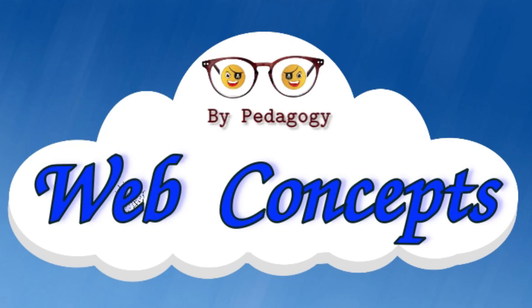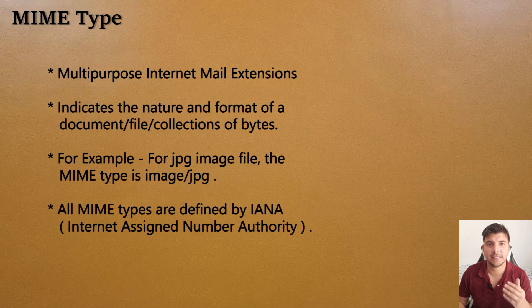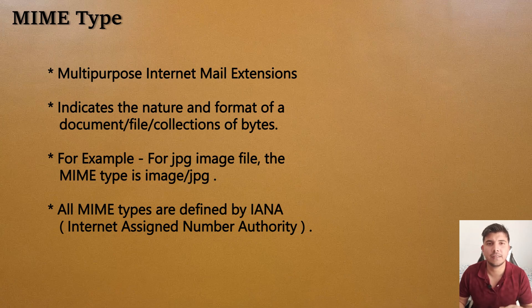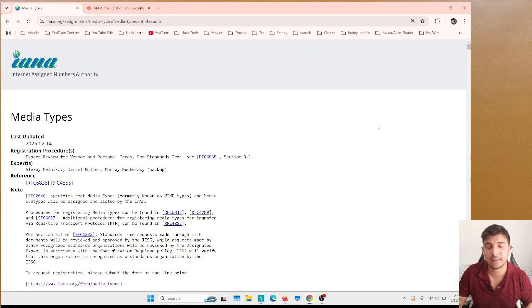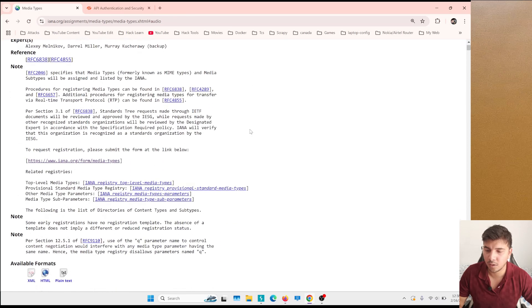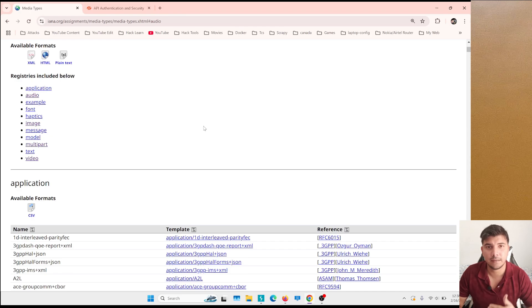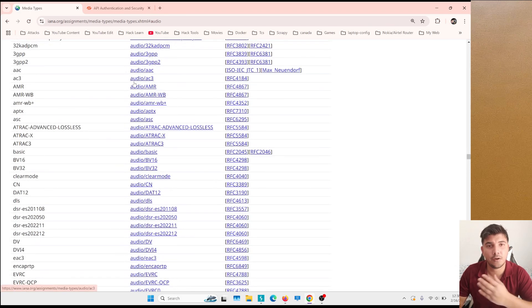First, let's discuss MIME type, which stands for Multipurpose Internet Mail Extension. It indicates the nature of a document, file, or collection of data. For instance, a JPG file has the MIME type image/jpg, and a video in AV1 format has the MIME type video/av1. All MIME types are defined by the IANA, and we can look them up on the IANA official website — I'll pin that link in the description. You can review all registered MIME types there; for example, clicking on audio shows all audio-category MIME types.